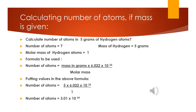Here is another example for calculating number of atoms when mass is given. We are going to calculate the number of atoms present in 5 grams of hydrogen atoms. We use the same formula: number of atoms = (mass in grams × Avogadro's number) / molar mass. Mass of hydrogen is 5 grams and molar mass of hydrogen atoms is 1 gram per mole. Putting in the values — 5 divided by 1 — the number of atoms found is 3.011 × 10²⁴.